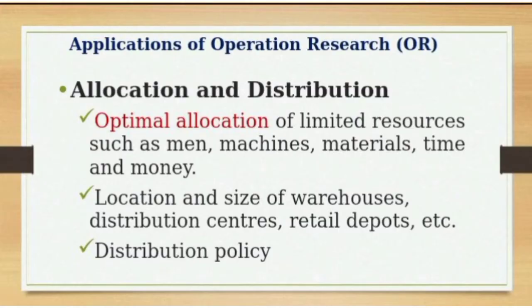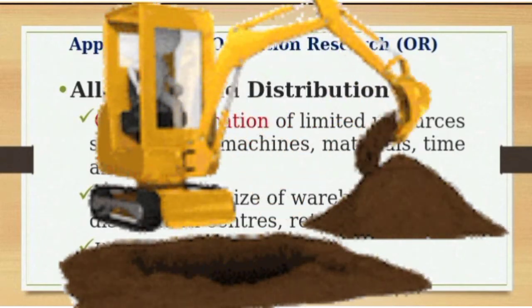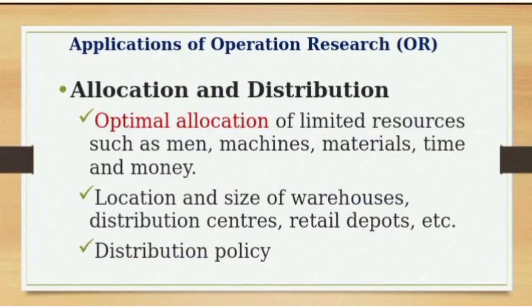The applications of operations research can be found in many areas of life. Number one is allocation and distribution — the optimal allocation of limited resources. Resources are scarce, whether you are talking about human resources, machines, material, time, and money — all extremely scarce. You have to allocate correctly and optimally such that you don't use too much.